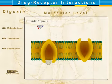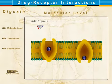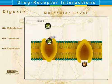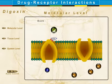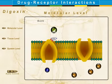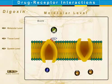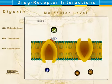When digoxin is added, it inhibits the sodium-potassium ATPase transport system, leading to a loss of potassium from the heart cells and an increase of sodium in heart cells. The increased sodium activates the sodium-calcium pump that exchanges intracellular sodium for extracellular calcium.